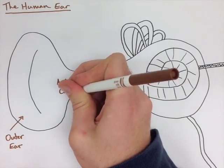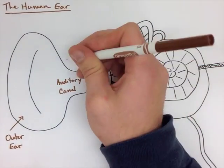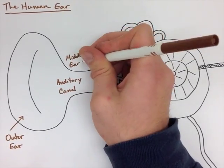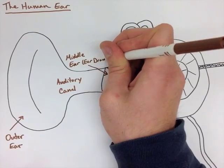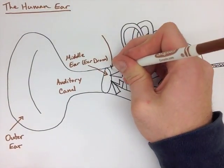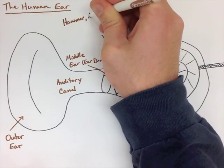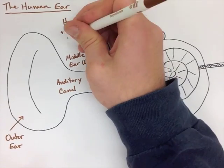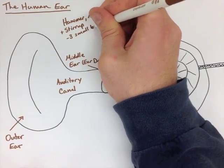The next thing we're going to look at is the middle ear, and the only thing we really need to know about that is that's where the eardrum is. Now attached to the eardrum on the inner ear are the hammer, anvil, and stirrup. This is the first part of the inner ear — three small bones that are used for sound amplification.